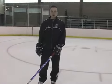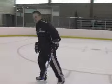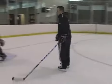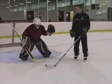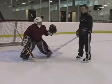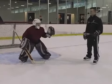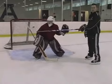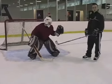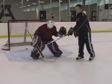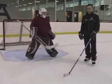Now we're going to show you the common targets on the goal. When shooting on a goalie, the five most common targets to shoot are the five hole, high glove side, high blocker side, low glove side, and low blocker side. These are the five most common targets.